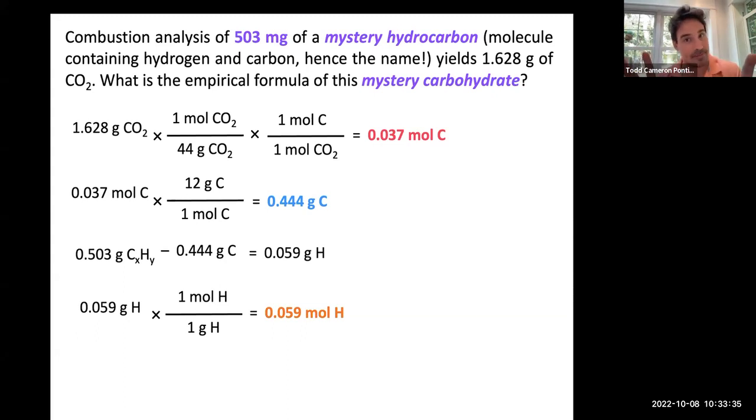We're so close. In order to make these numbers more user-friendly, we can take the smaller number of moles and we'll divide both values by that. In this case, the carbon, we only had 0.037 mole of it. So, we'll divide both of them by that. And what this does is it makes one of them have a value of one for our ratio. For every 1 mole of carbon, there are 1.6 mole of hydrogen.